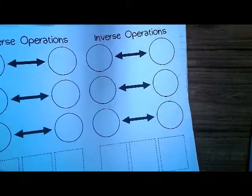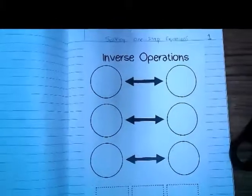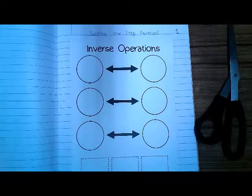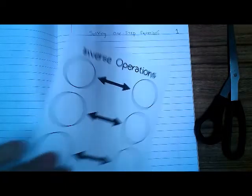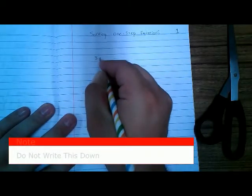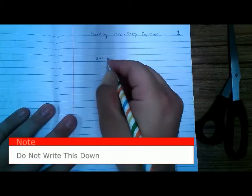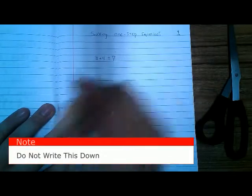We're going to start by cutting this inverse operations handout in half because we only need one part of it. Before we talk about inverse operations, let's talk about equations in general. We'll put this aside. Let's say you have just a simple 3 plus 4, and 3 plus 4 is equal to 7.